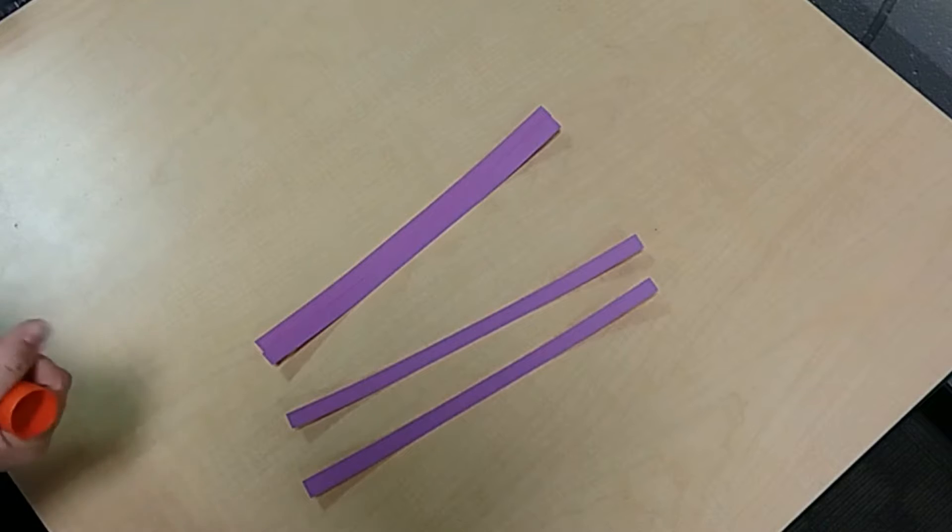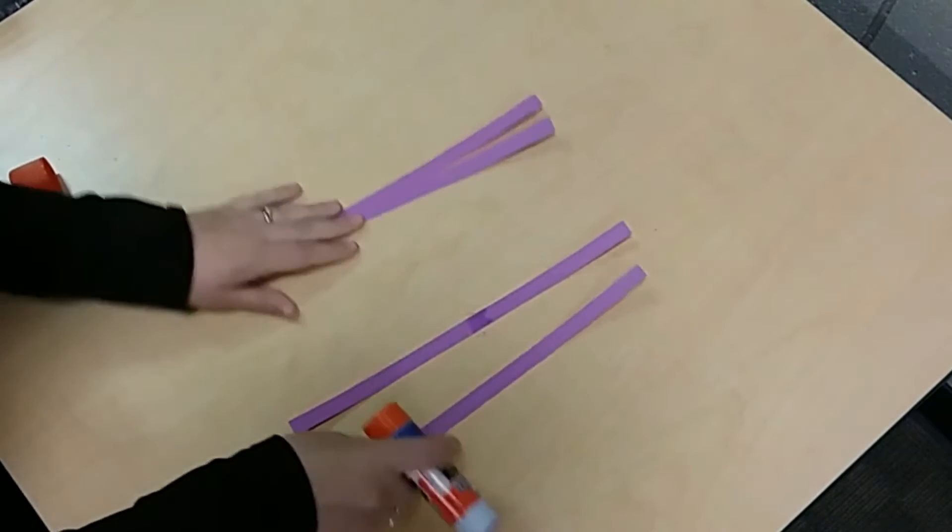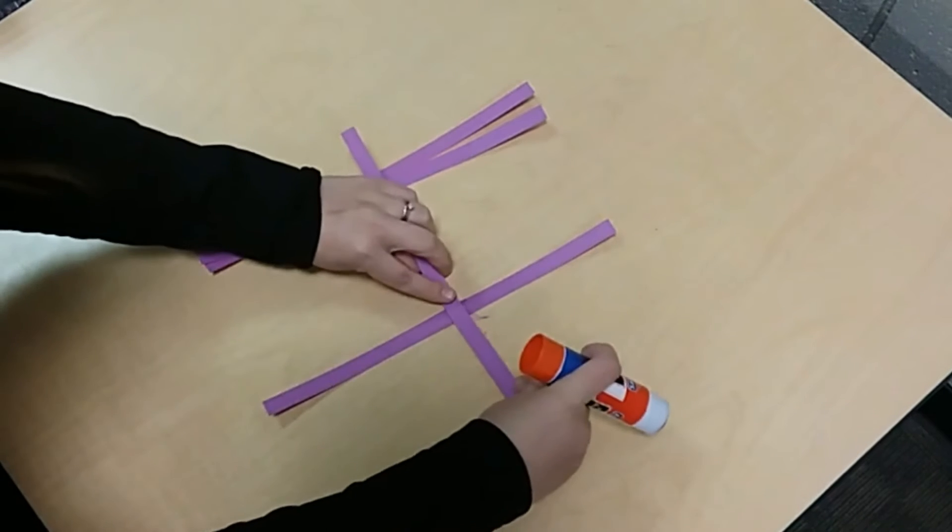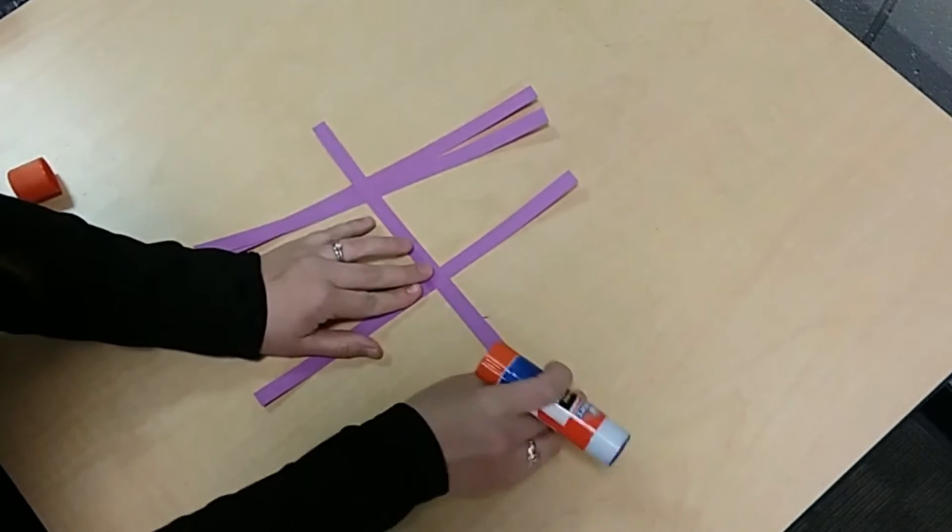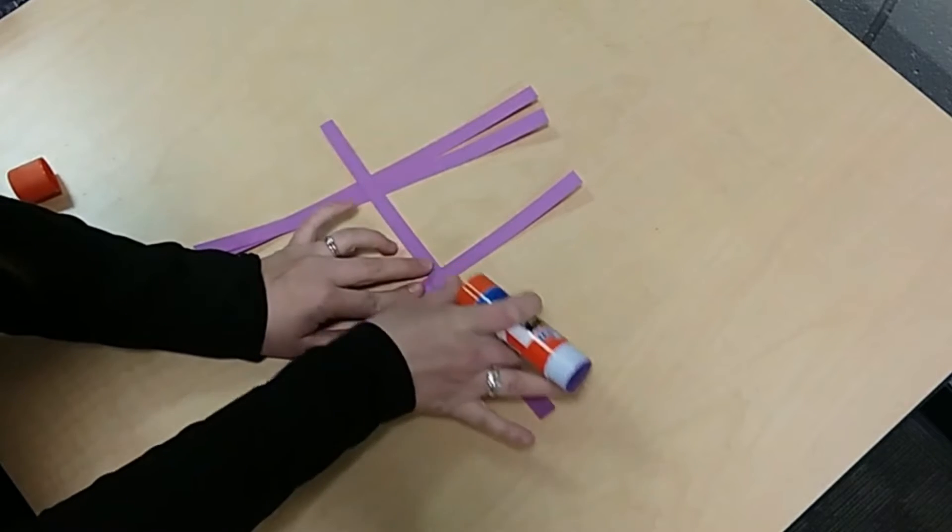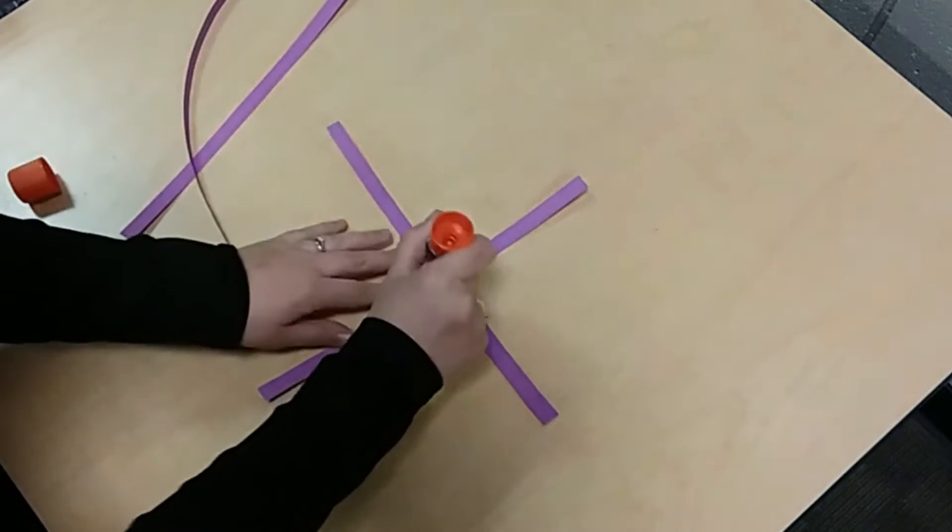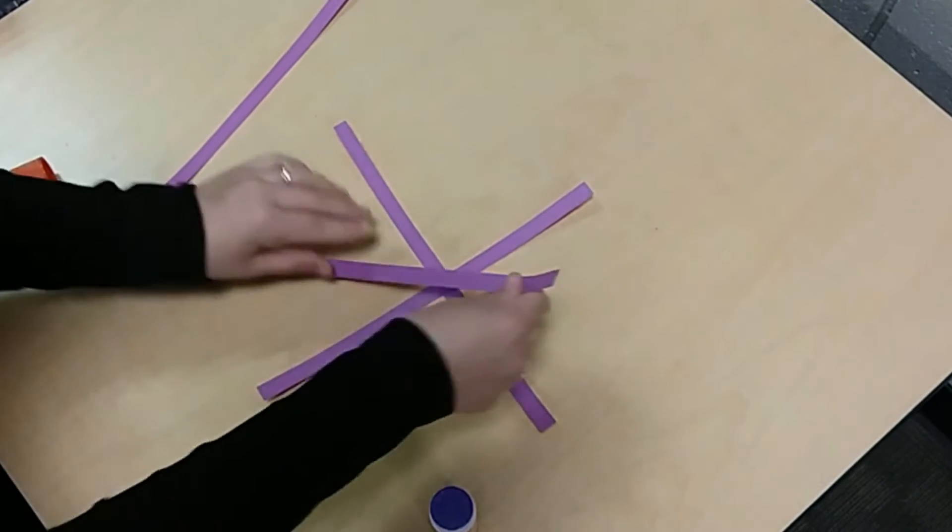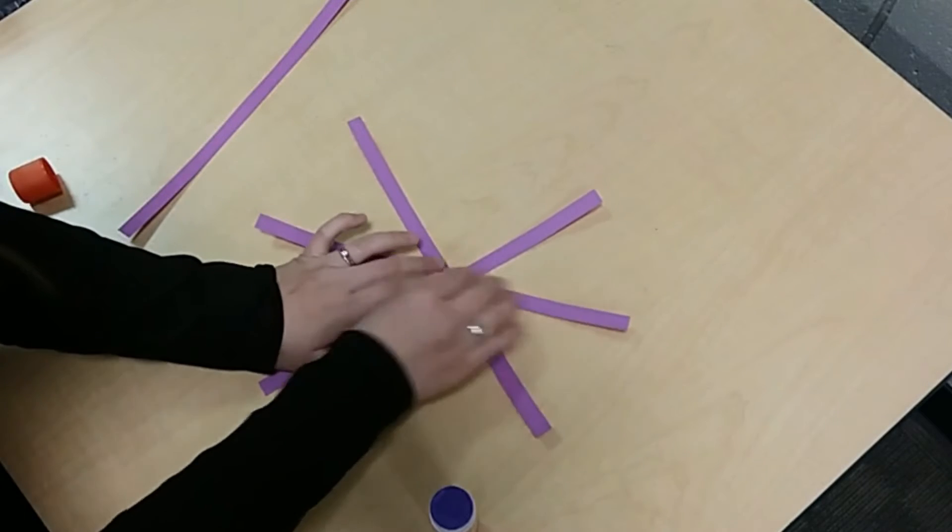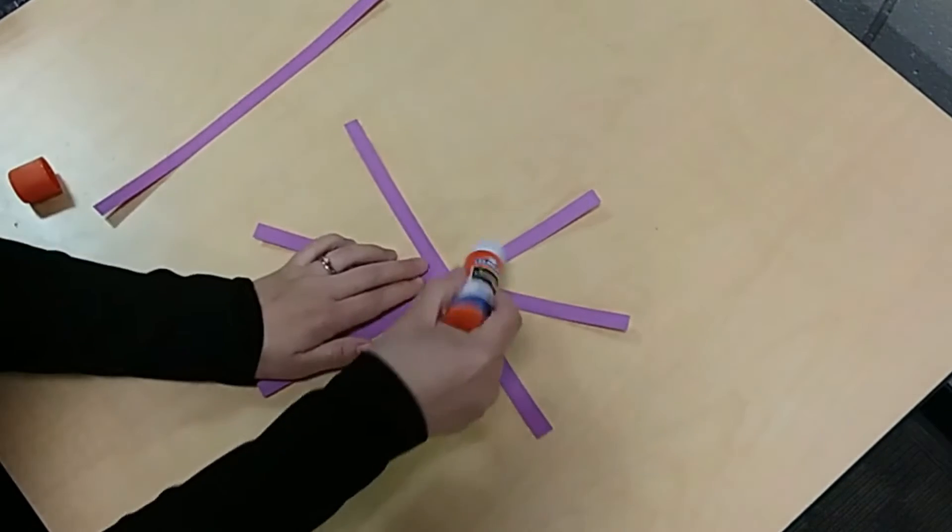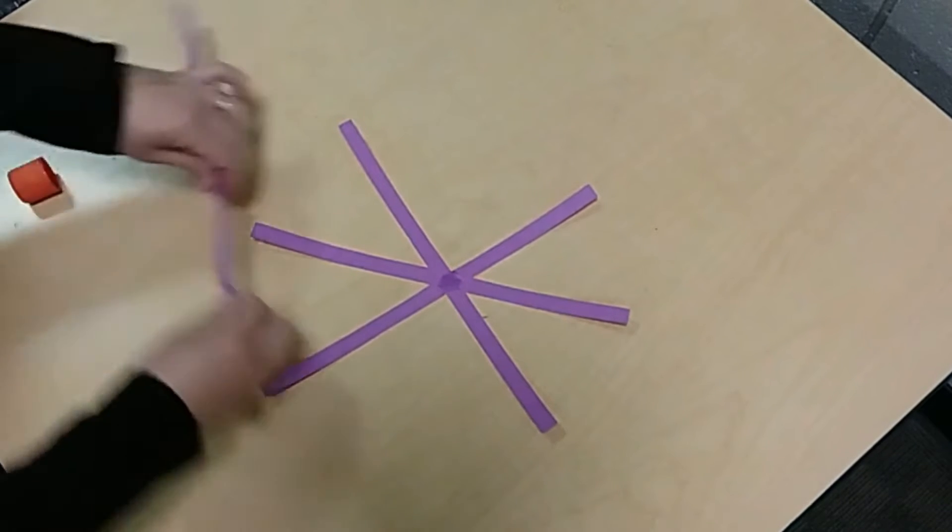Then you're going to take some glue and start by making a cross, gluing in the middle. Put more glue there and put that one in the middle. Try to put it even with the other ones, and you'll do the same thing with the last one so it kind of makes a star shape.